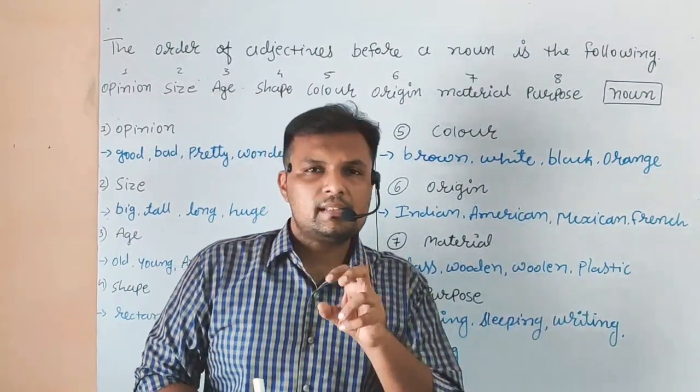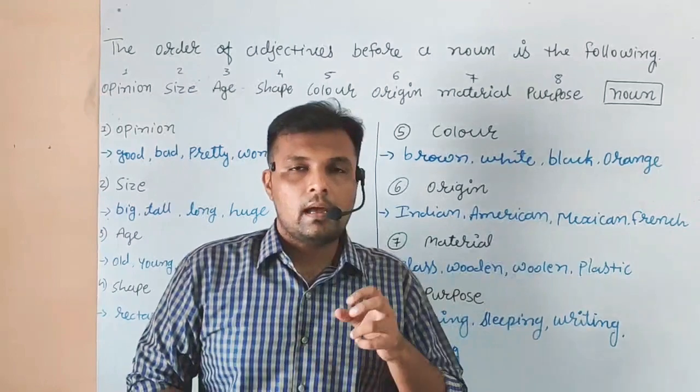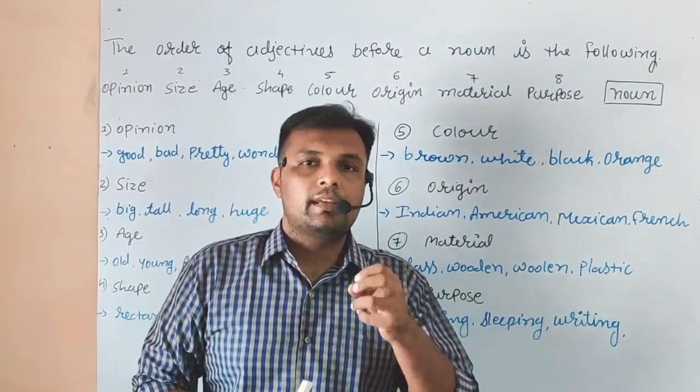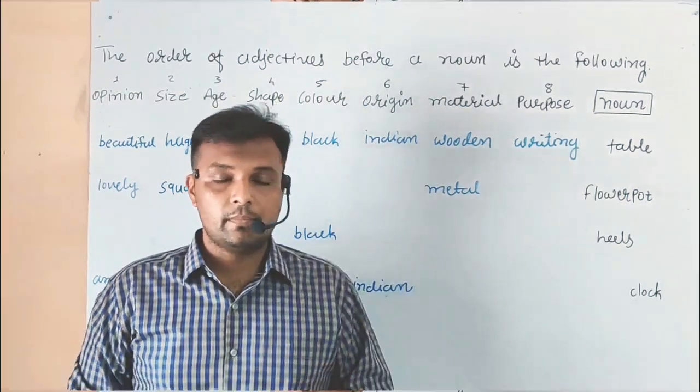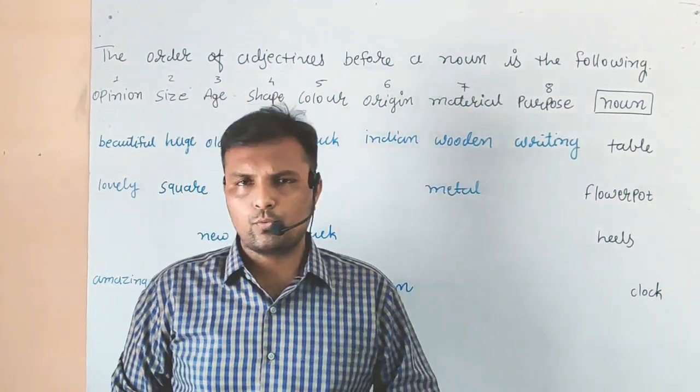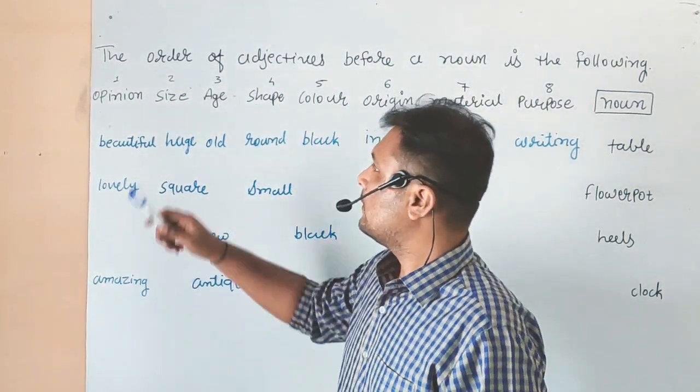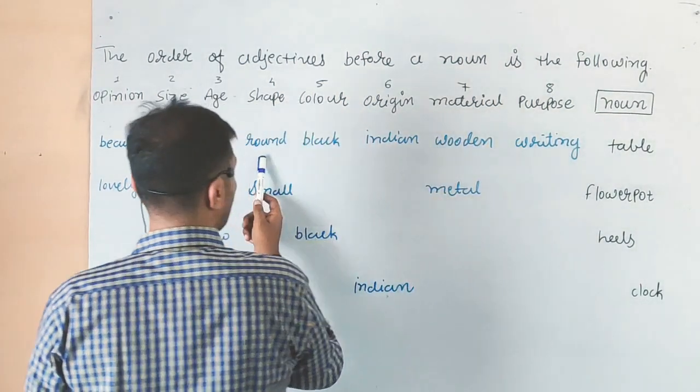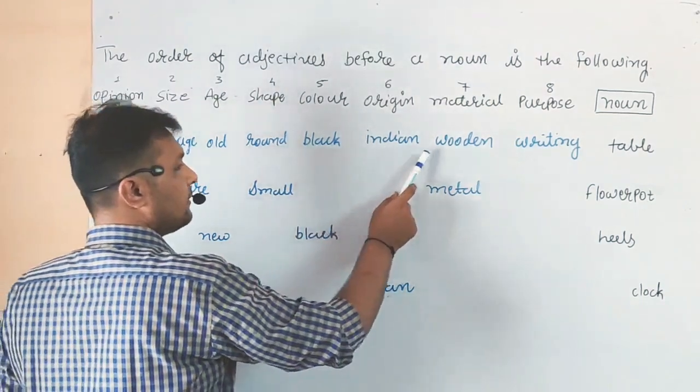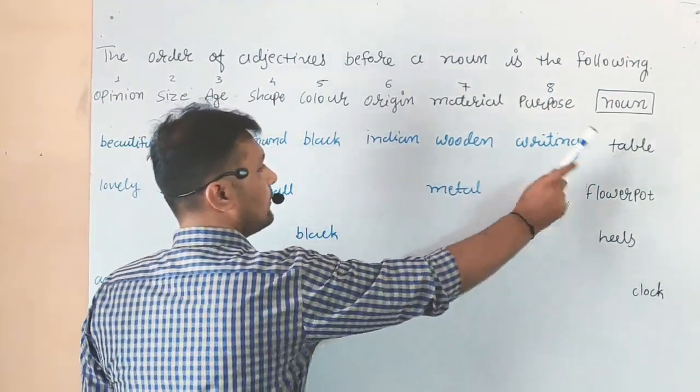Let's see some examples of how we use adjective orders before a noun. Beautiful, huge, old, round, black, Indian, wooden, writing table.